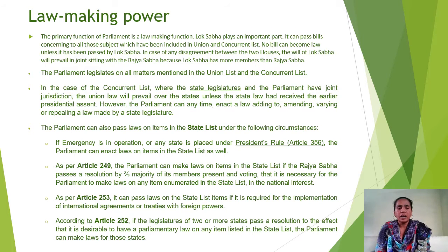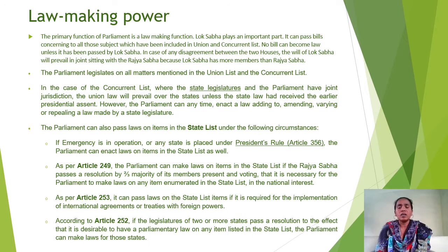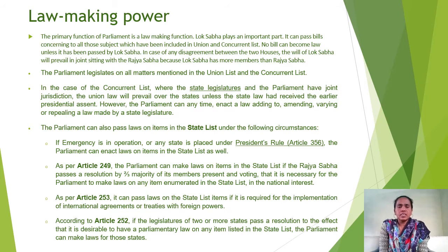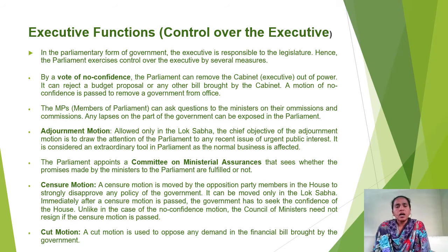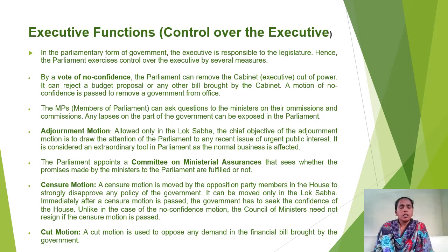Under Article 252, if legislatures of one or more states pass a resolution to the effect that it is desirable to have a parliamentary law on any item listed in the State List, then parliament can make laws for those states which have requested it. So under four conditions — first, during emergency; second, if the Rajya Sabha passes a resolution for national interest; third, for the proper implementation of international treaties; fourth, if state legislatures have requested parliament to make a law — parliament can also make laws from the State List. In this way, parliament has wide law-making powers.